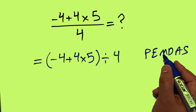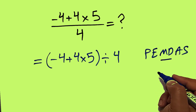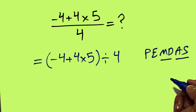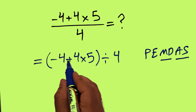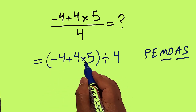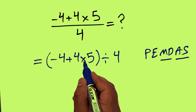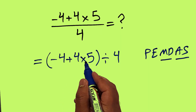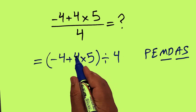Remember that multiplication and division have equal priority and we have to work from left to right, and the same applies to addition and subtraction. So here first we do this parentheses, and inside this parentheses we have this addition and this multiplication. According to PEMDAS, multiplication has higher priority than addition.